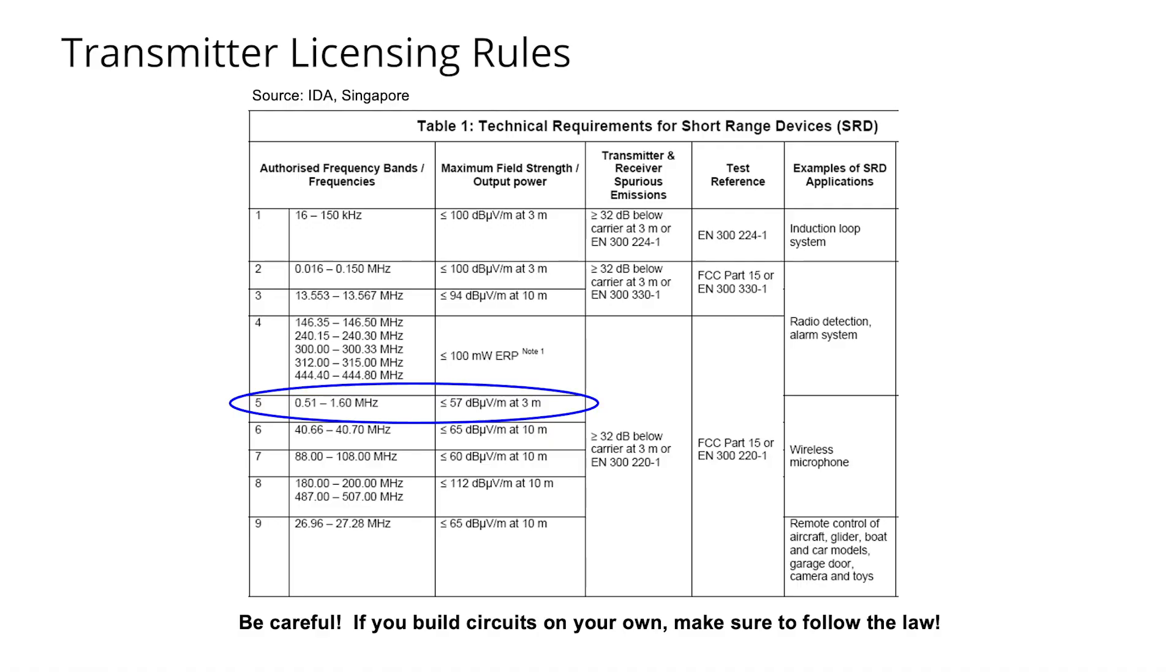If you were to actually build one of these spark gap transmitters and operate it at very high voltages with an induction coil, you would certainly be able to transmit quite far, several kilometers for example, even at moderate power levels. But if you were to do that, you would certainly violate laws related to allowable output powers of radio transmitters.